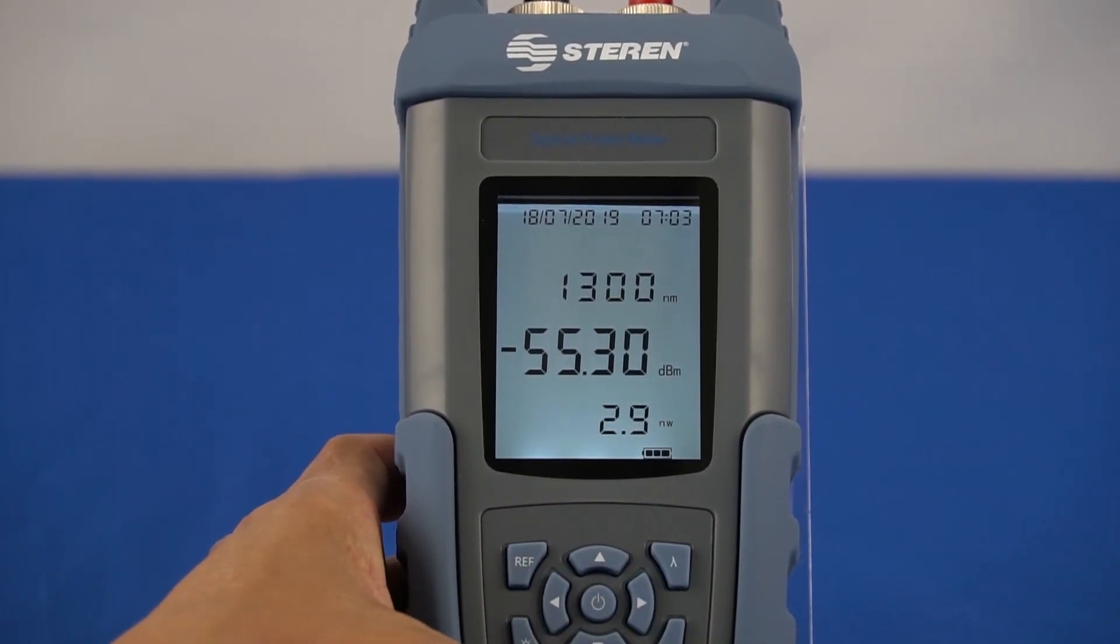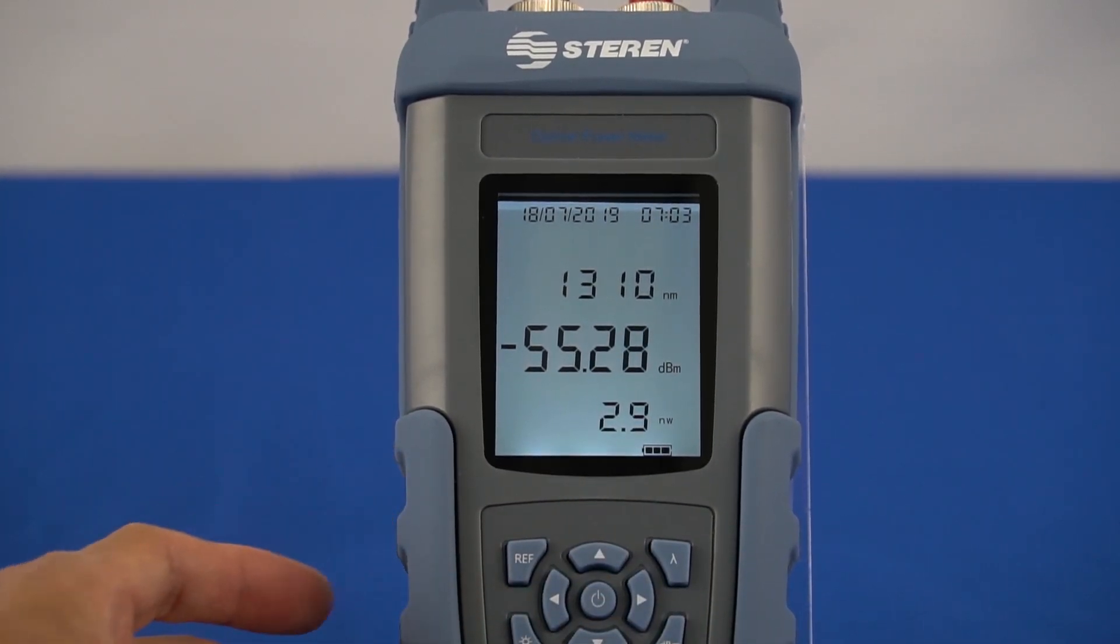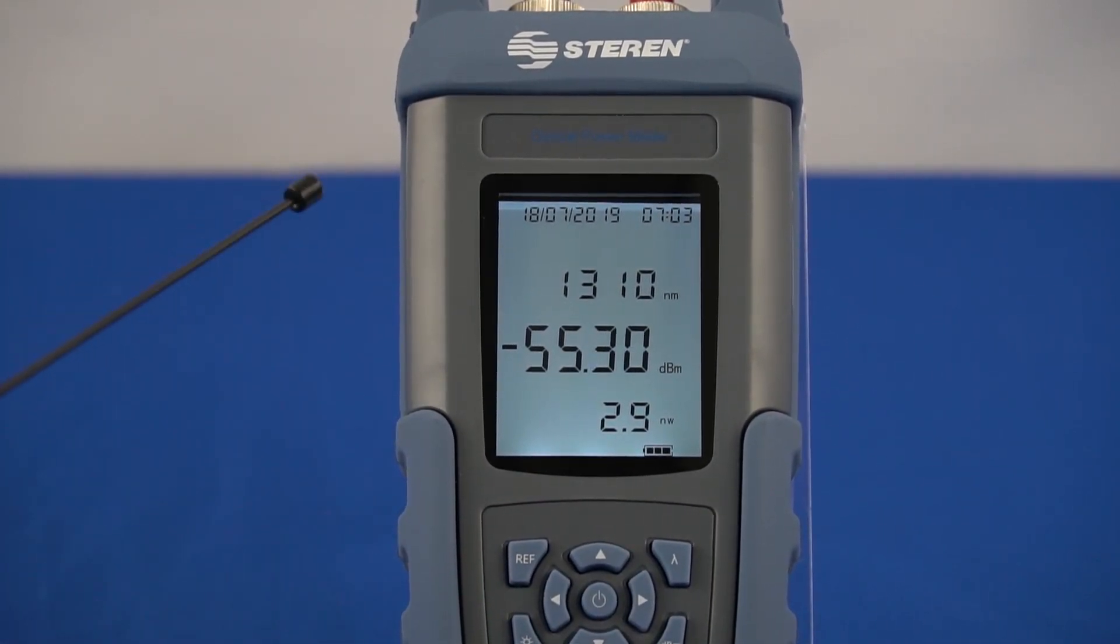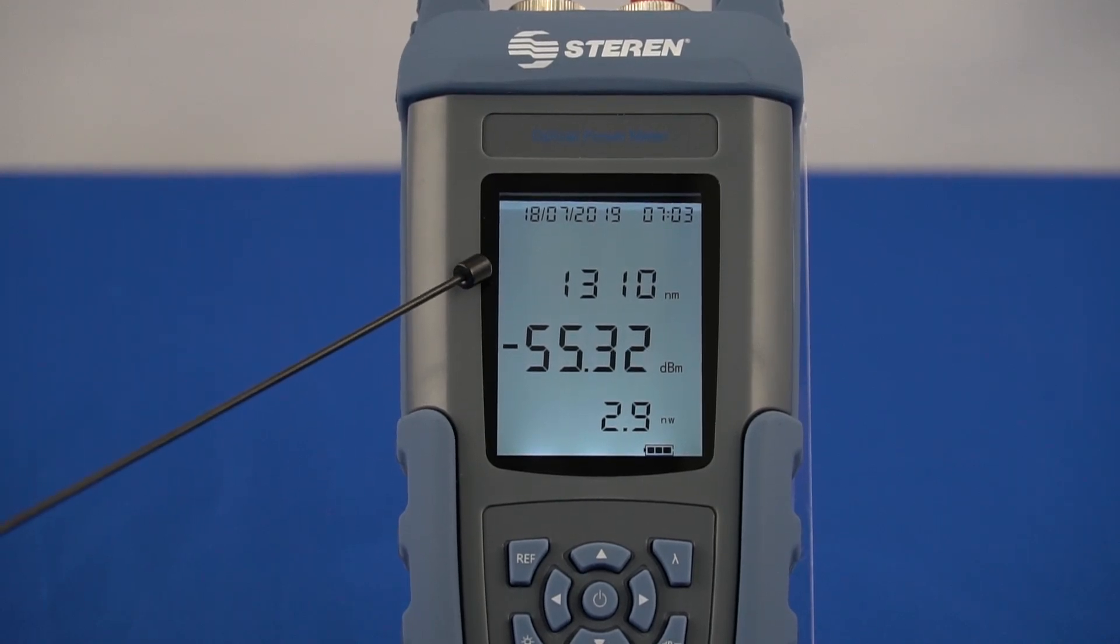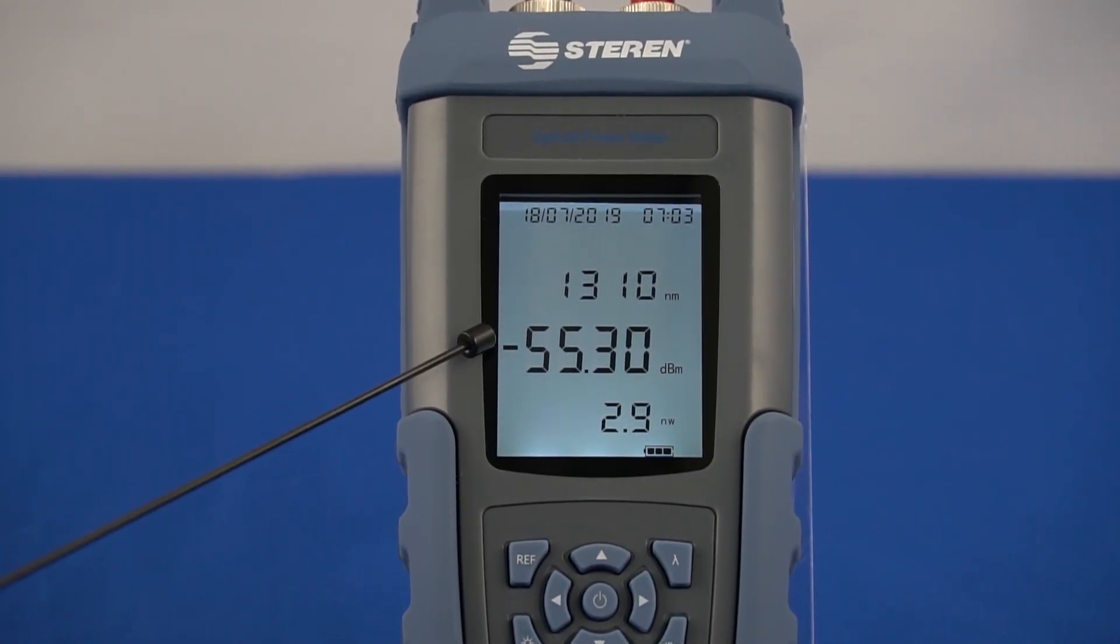Select the wavelength by pressing the lambda button until the desired wavelength is displayed on the LCD screen. In this case, we will use 1310 nanometer for testing. Below the wavelengths are absolute optical power measurements in dBm and watts.